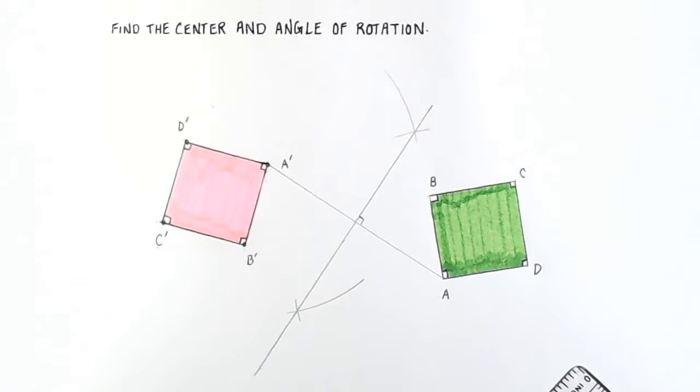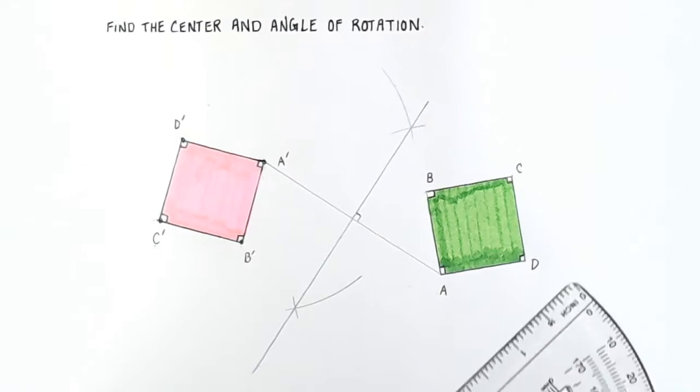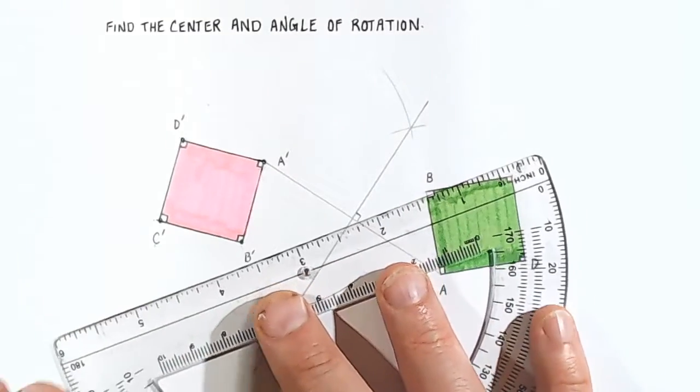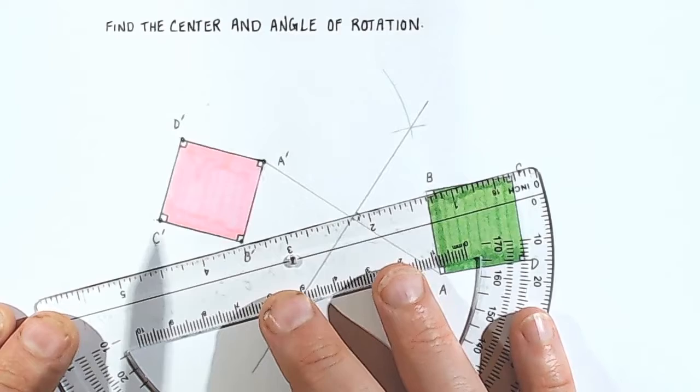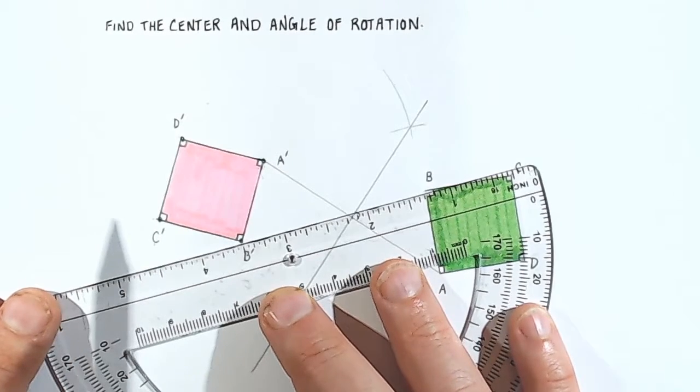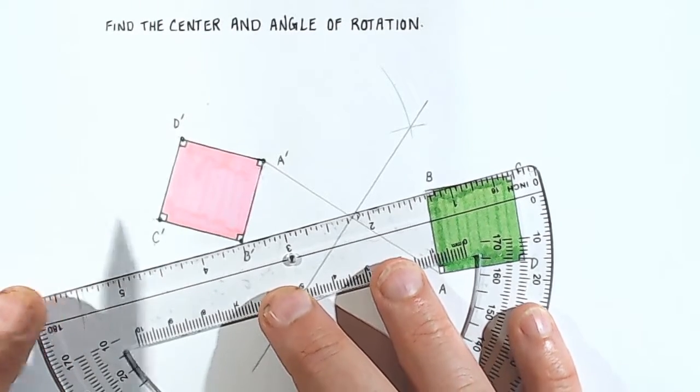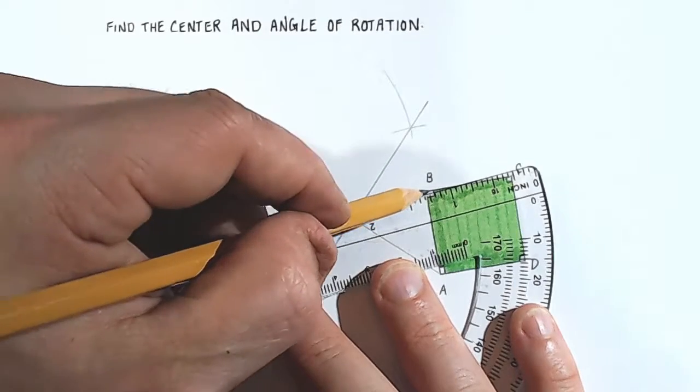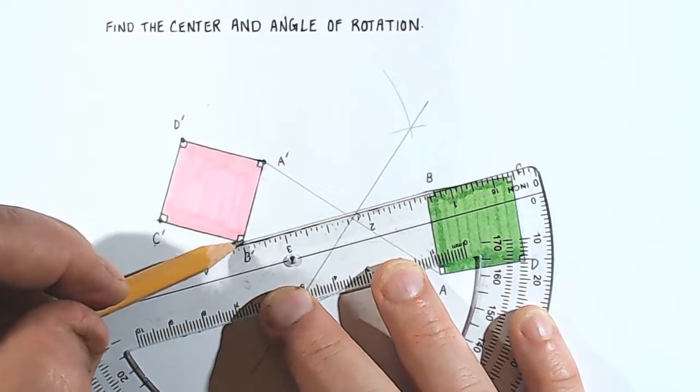Okay, now we need to do that one more time. So we did one for A to A prime. How about one from B to B prime? So the very first thing we do is we're going to connect B and B prime with a line segment. And what we're going to do now is construct another perpendicular bisector. So first, draw a line connecting those two points.